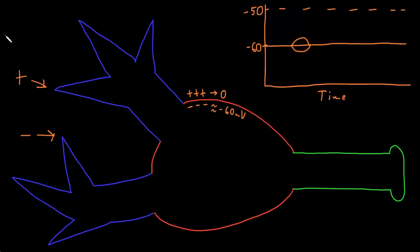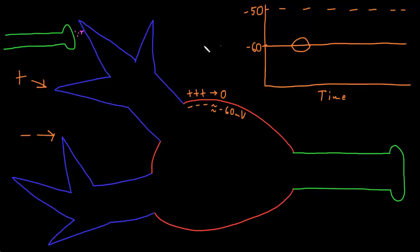Most neurons respond to inputs from other neurons in the form of neurotransmitter molecules released at synapses. If this is the axon terminal of another neuron, it may release neurotransmitter at the synapse where the two neurons come together, which will bind to receptors on the membrane — in this case on a dendrite — and produce some kind of graded potential. Depending on the neurotransmitter and the receptor, this may be an excitatory or an inhibitory input.